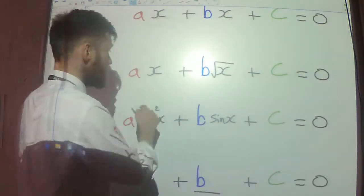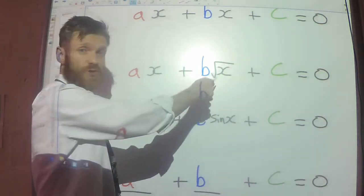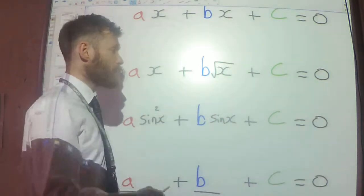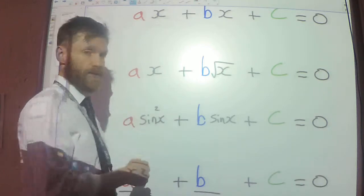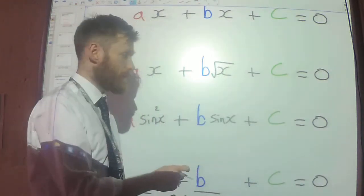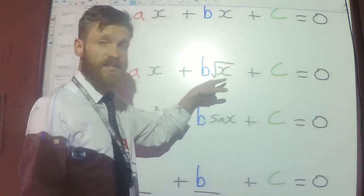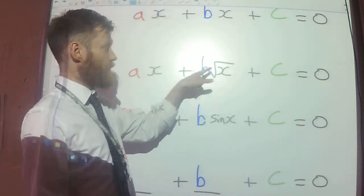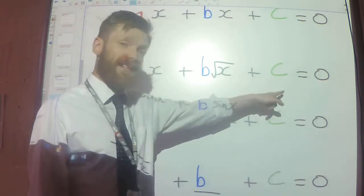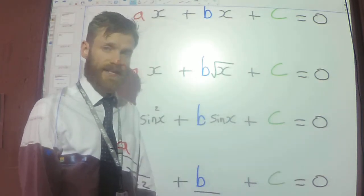Same idea here. When I square this term in the middle, x to the power 5 times x to the power 5 is x to the power 10. I've got a constant on the end, so again this is what I would call a hidden quadratic. This one, I've got root x in the middle, and root x times root x gives me x. And again, I've got my constant on the end. So any time where you have the term in the middle, and you can square it to get the term at the front, and there's a constant on the end, that is what I mean by a hidden quadratic.